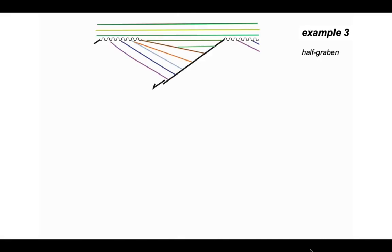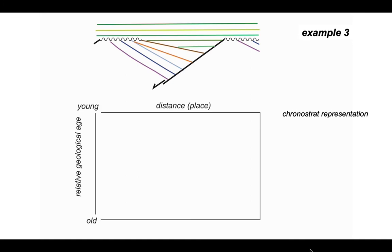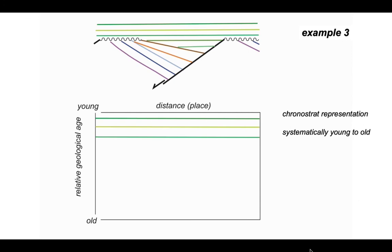The third and final example is a half graben visible in the cross-section. We have rocks that have been tilted, a half graben filled with sediment, and the whole lot banked over. The wiggly lines represent erosional unconformities on the fault blocks. We again plot horizontal distance versus geological age, old to young, working back in time. The youngest rocks plot across the top of the diagram. The three green horizons trace right across, but the slightly older greens are restricted to the half graben, and even more so for the one underneath.